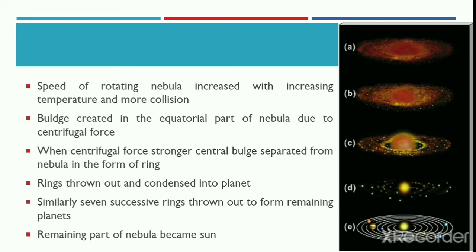Due to the increasing temperature and rotational speed, a bulge was created in the equatorial part of the nebula due to centrifugal force. When the centrifugal force became stronger and stronger, the central bulge separated from the nebula in the form of a ring.